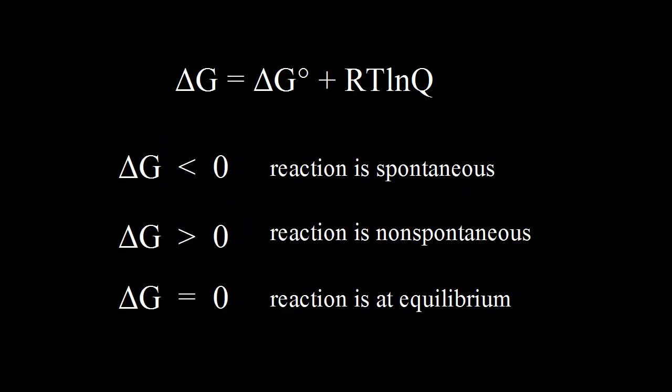The relationship between the change in free energy and Q, the reaction quotient, is very important to understand. The change in free energy, or delta G, is the instantaneous difference in free energy between the reactants and the products. Q is our reaction quotient — it tells us where we are in the reaction, and it has the same form as the equilibrium constant K. Delta G zero is the standard change in free energy, meaning the change in free energy under standard conditions. R is the gas constant and T is the temperature in Kelvin.